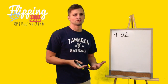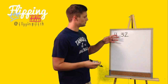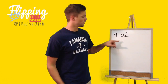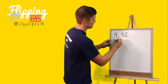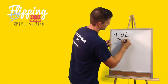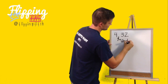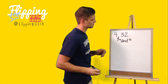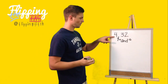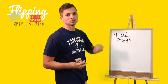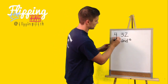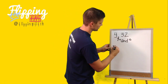When we want to write out the word form of a decimal, it's important that we do not write the word 'decimal.' The decimal point is represented by the word 'and.' So when we look at the number four point three two, we are going to start writing it out by looking at the whole number first: four.